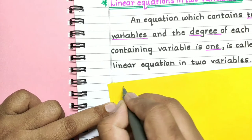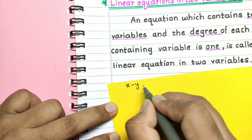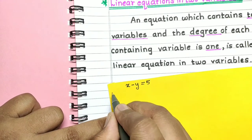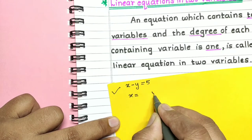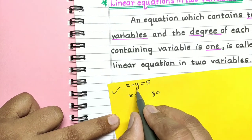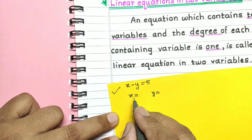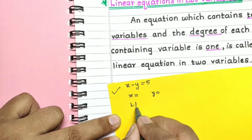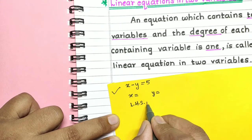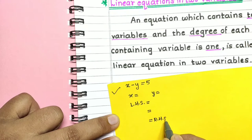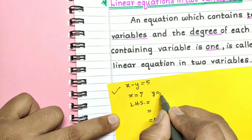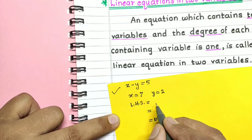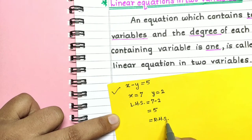Now let's look at solutions of linear equations in two variables. Consider the equation x minus y is equal to 5. The solution is the set of values of x and y which satisfy this equation — meaning when substituted into the LHS, they give the RHS. If x is equal to 7 and y is equal to 2, then LHS becomes 7 minus 2 which is 5, equal to the RHS.